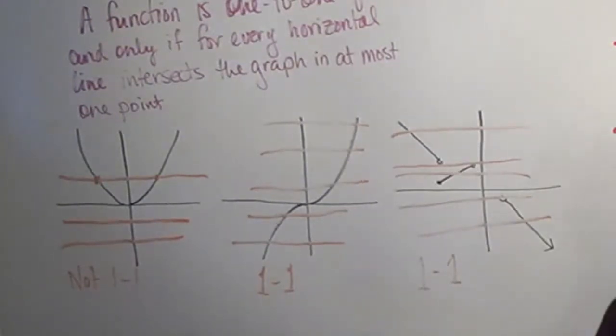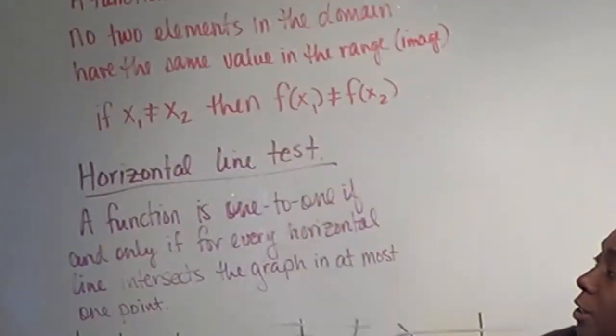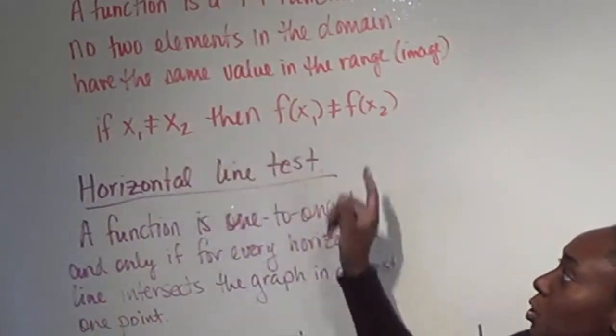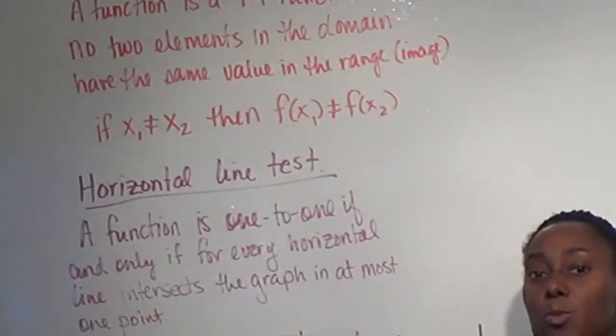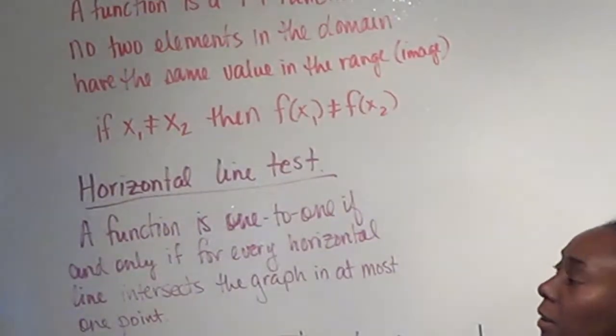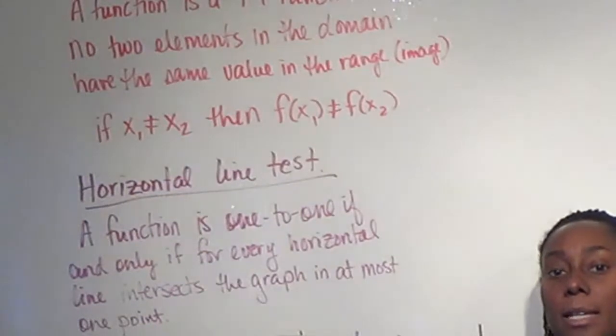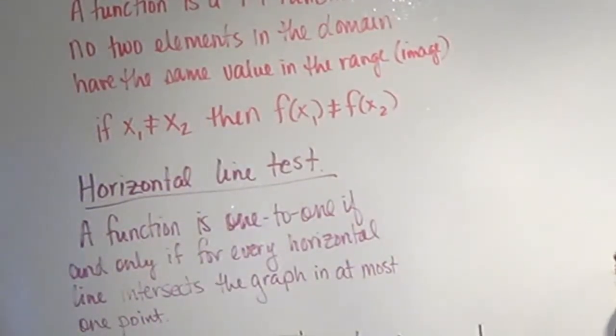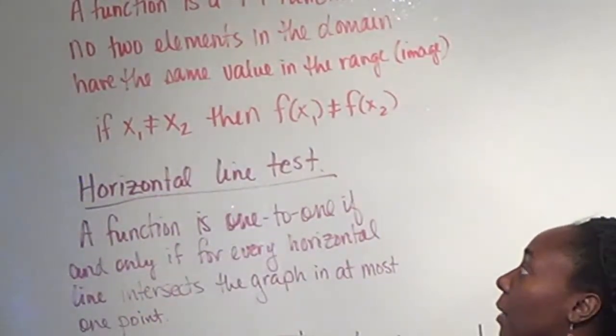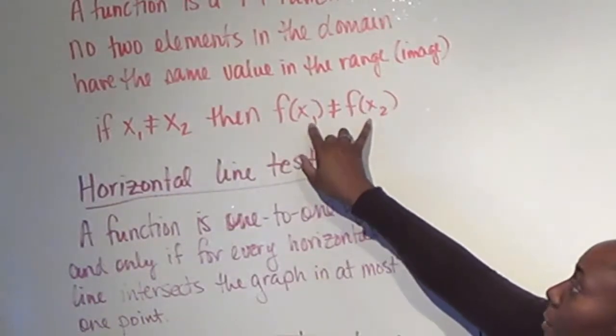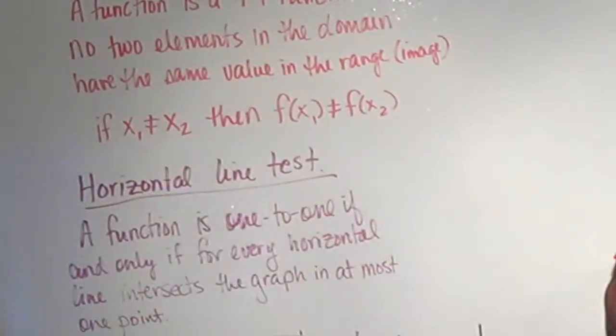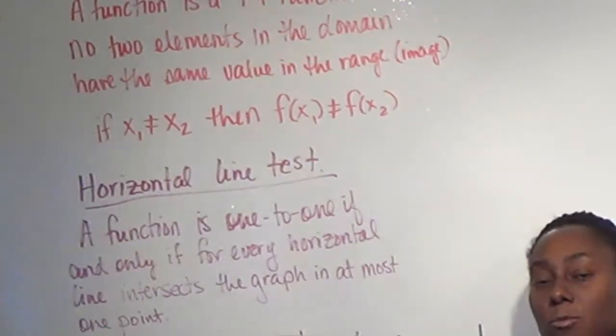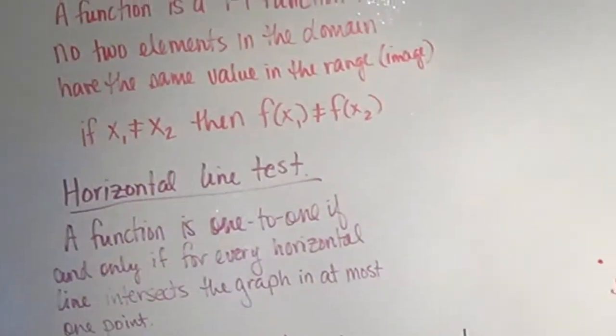The other way you can test one-to-one, using your function, is to use this notion in the definition. If I pick two different values, call it x1 and x2, and I plug them into the function, do I simplify down and get the same answer? If I take the image of two functions, is it the case that I actually get two different variables? We can check that algebraically.